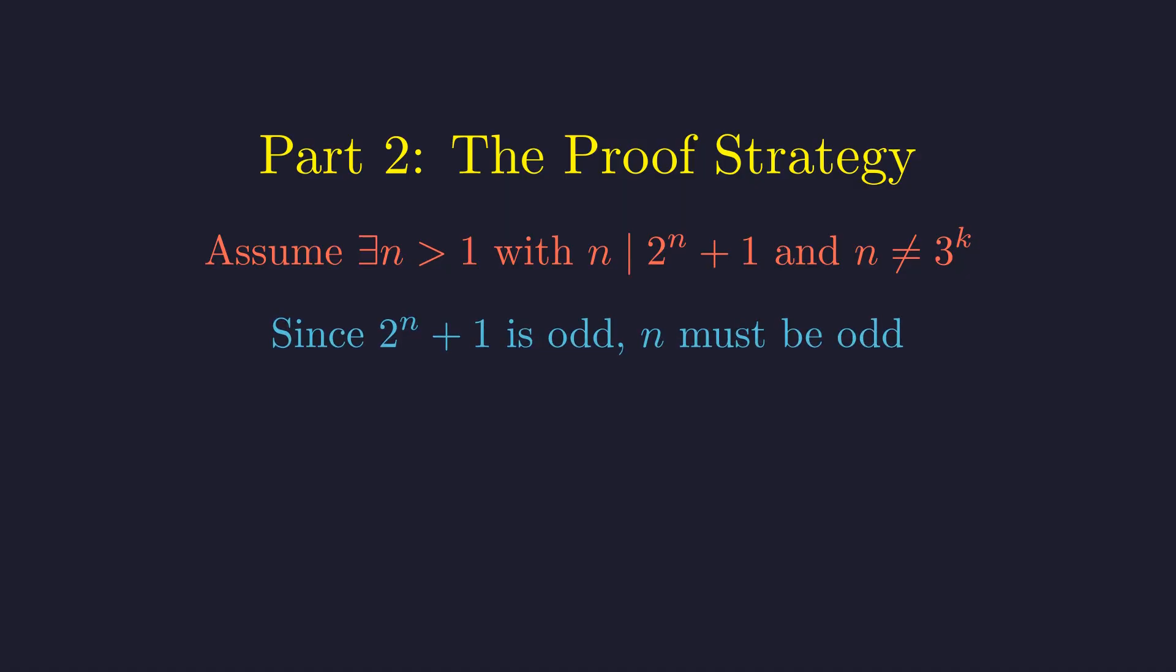First, observe that 2 to any power is even, so 2 to the n plus 1 is always odd. Therefore, any divisor n greater than 1 must itself be odd.